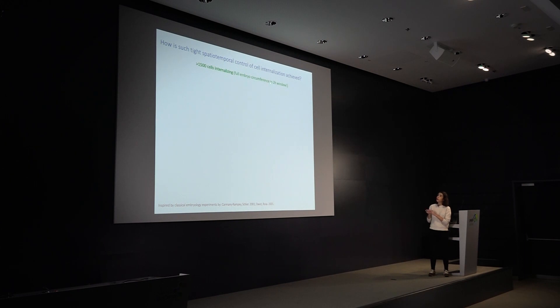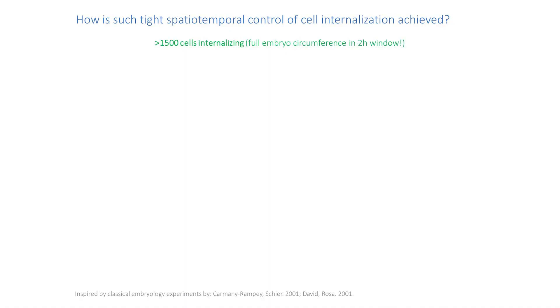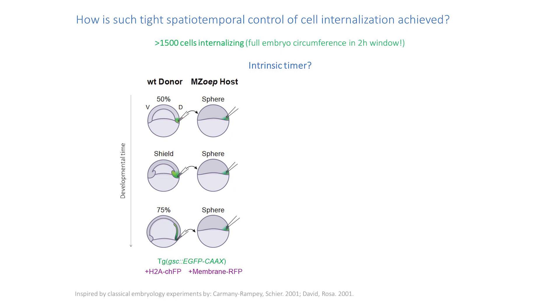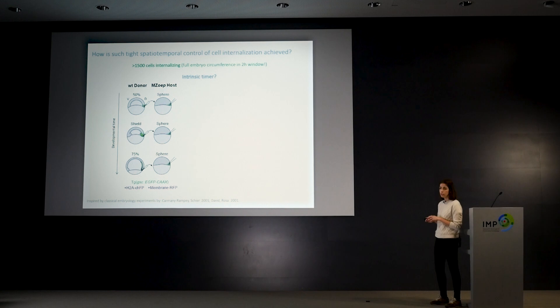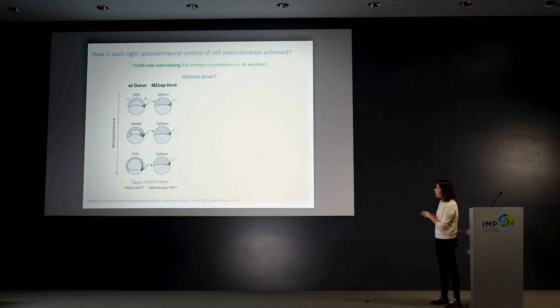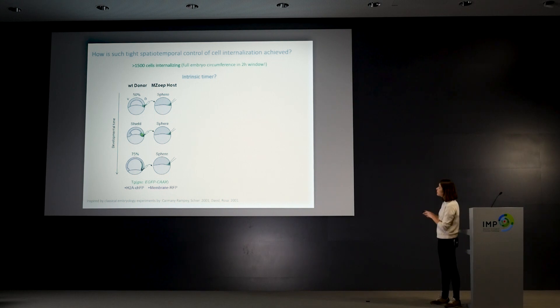This occurs over a two-hour time window, it's a fully 3D process around the entire circumference of the embryo, and the difference in timing of internalization between neighboring cells is only a few minutes. We thought perhaps cells have some sort of timer — maybe they wait until they reach the margin to actually start internalizing. To test this idea we performed transplantation experiments inspired by classical embryology, collecting wild-type cells at different stages of gastrulation from the marginal region.